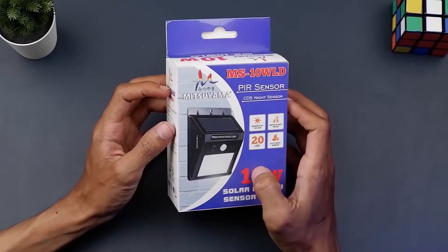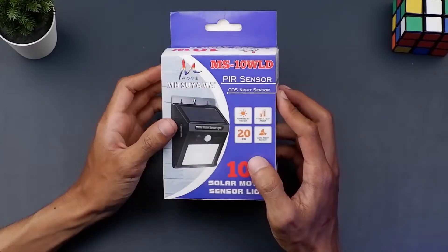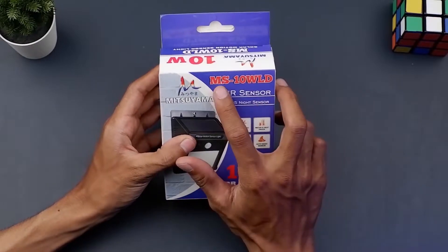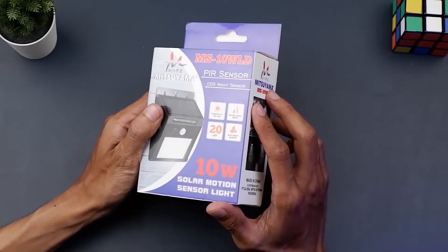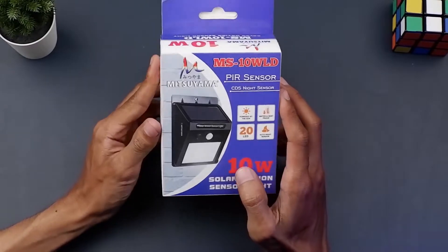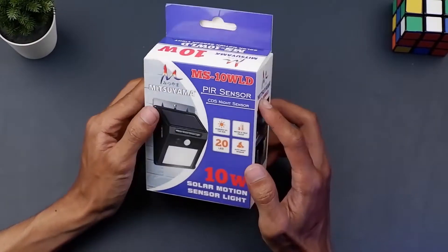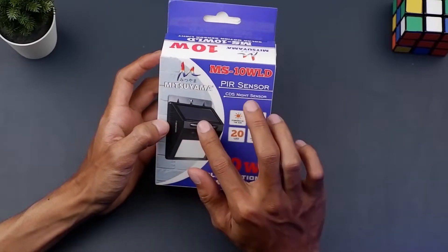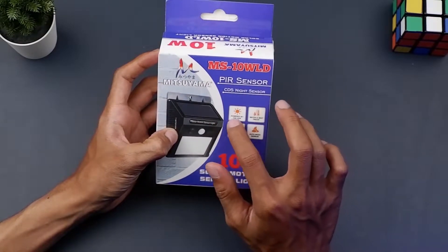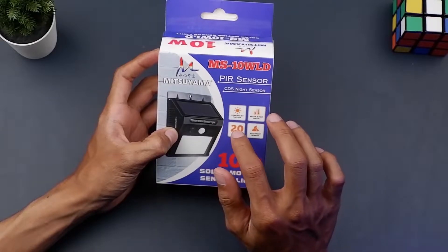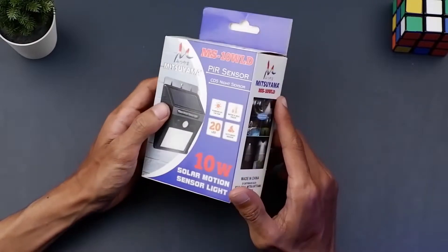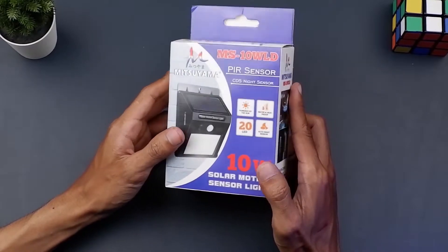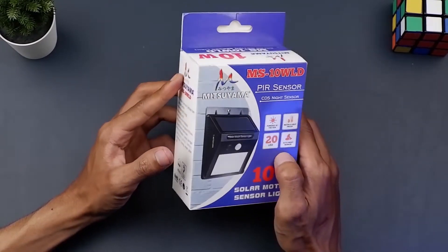Oke bisa kalian lihat seperti ini box dari lampu emergency nya. Lampu ini produk dari Mitsuyama dengan kode produk MS10WLD. Dari kemasannya atau box cukup menarik ya warna biru putih dengan gambar atau foto produknya disini dan ada spesifikasi-spesifikasi dari lampu ini yang akan kita bahas nantinya. Gak usah lama-lama langsung saja kita unboxing apa saja yang akan kita dapat di dalam boxnya.